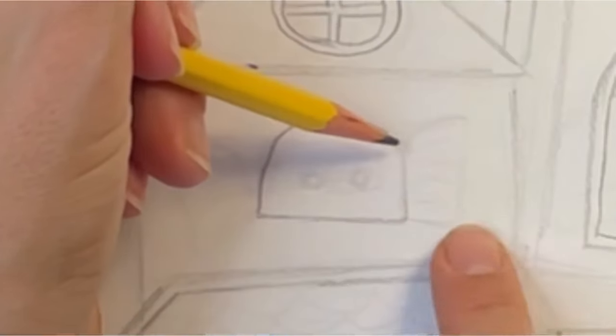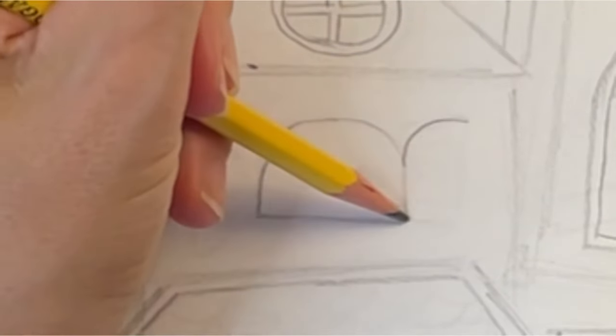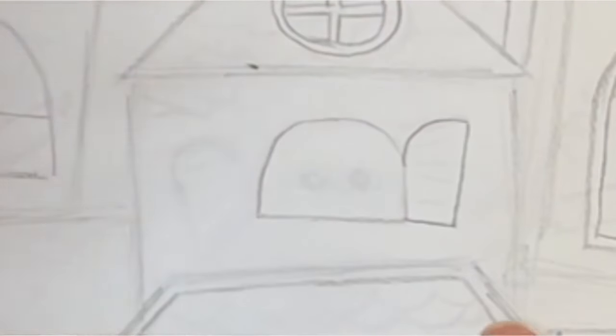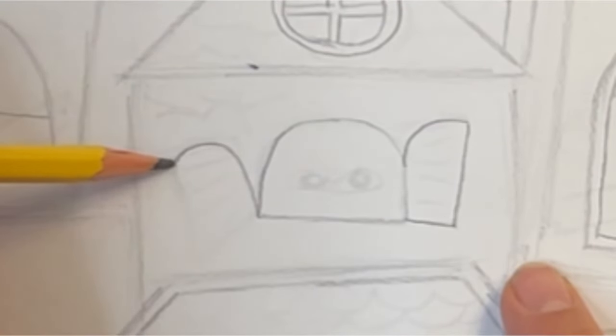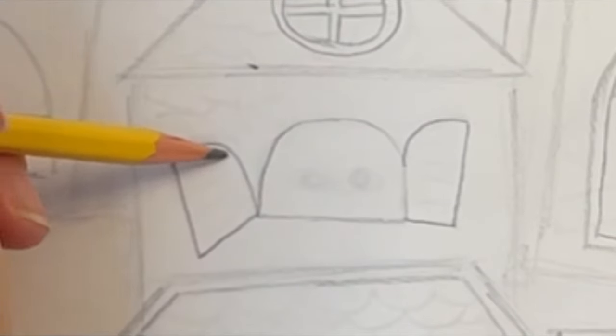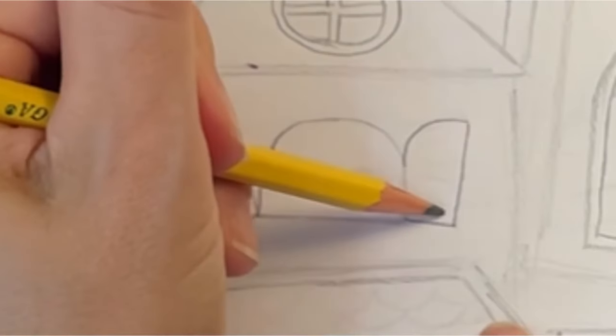You can add window shutters next to a half oval window by drawing this shape. Notice how the shutter on the left is coming unhinged and falling off. Now I'm adding some lines for slats.